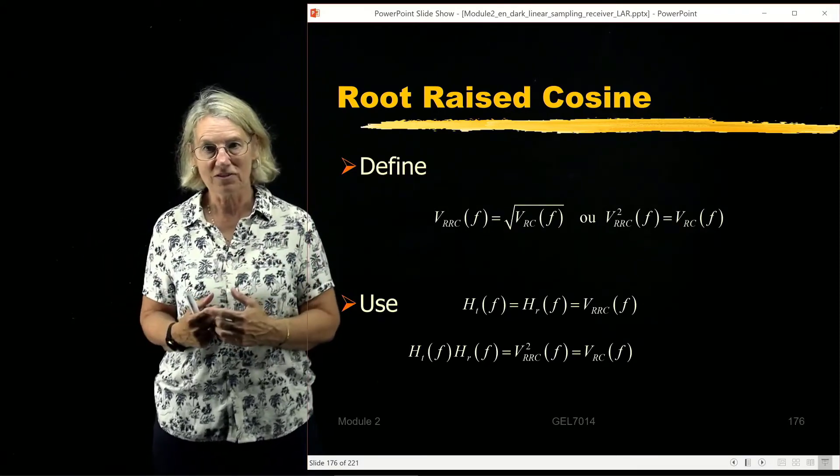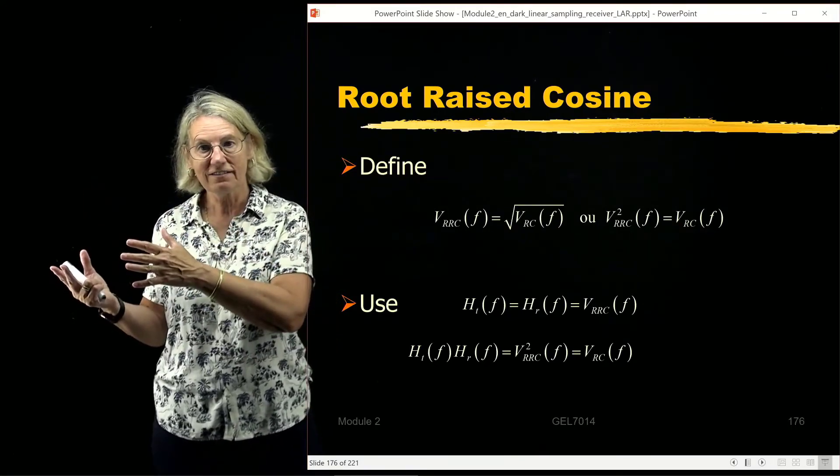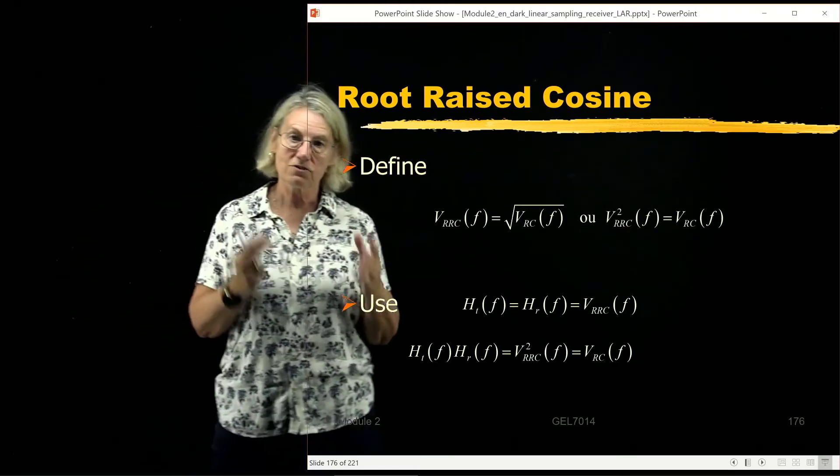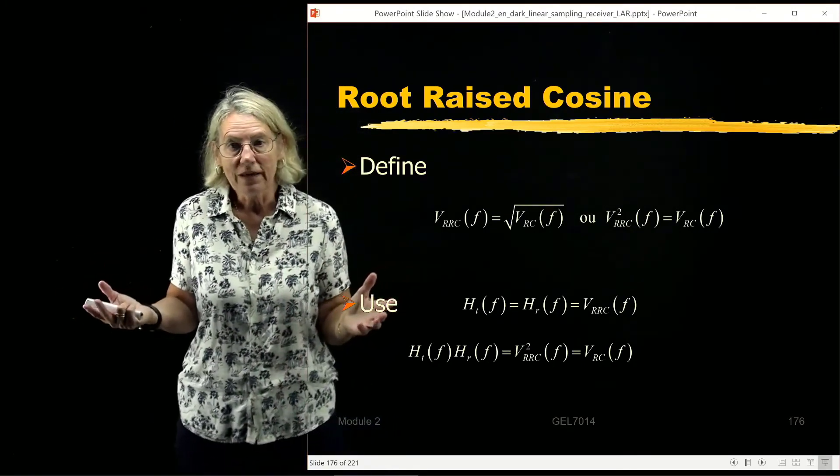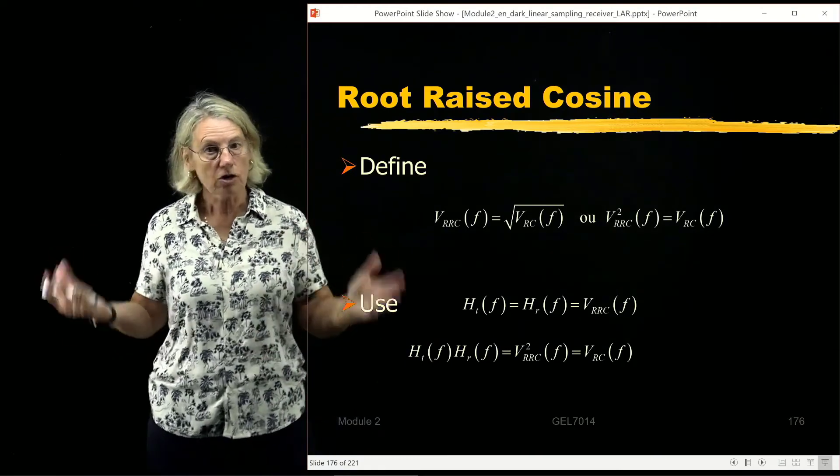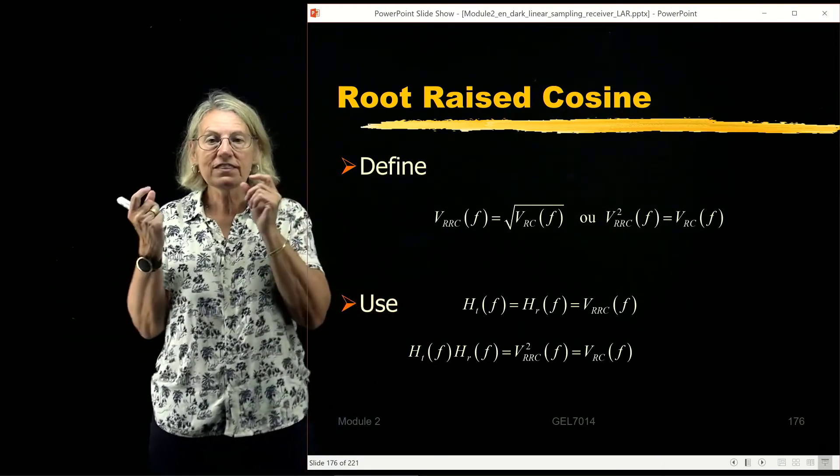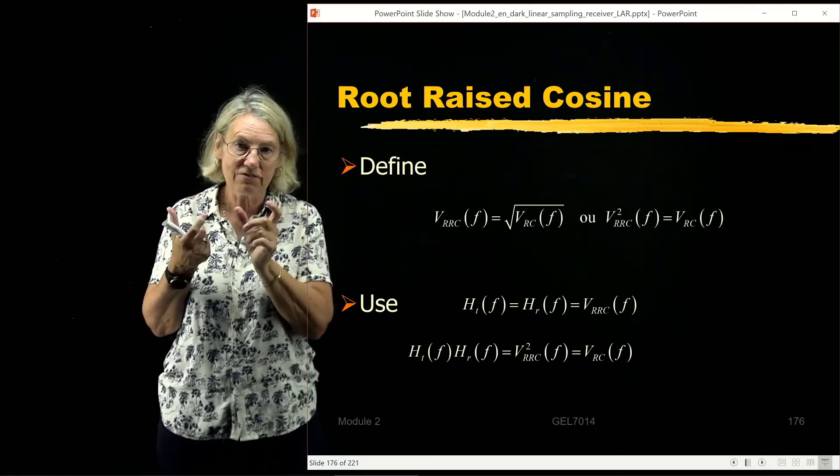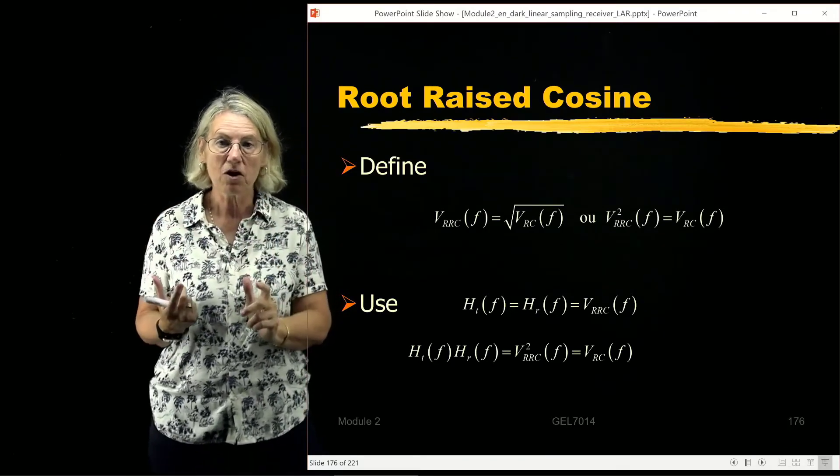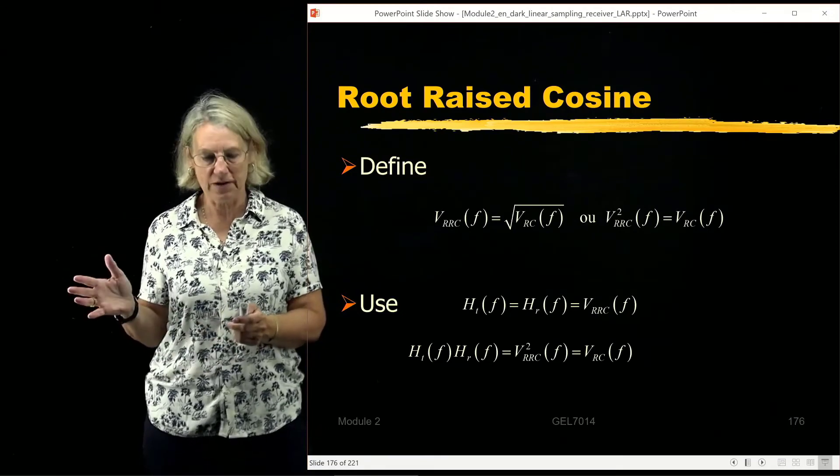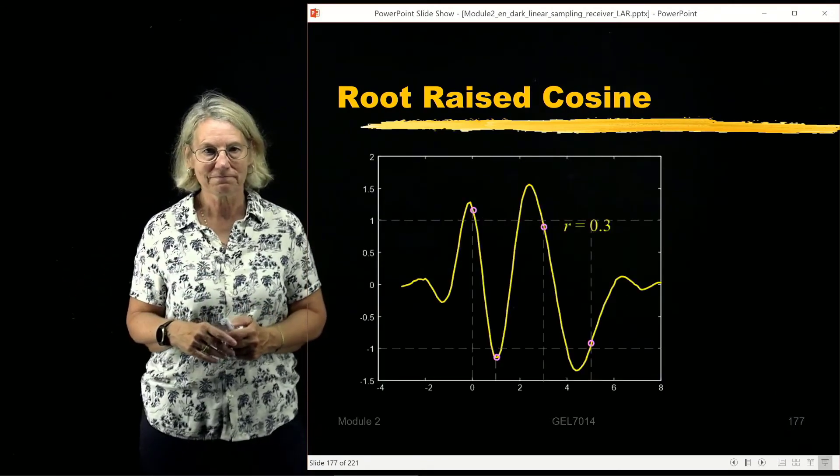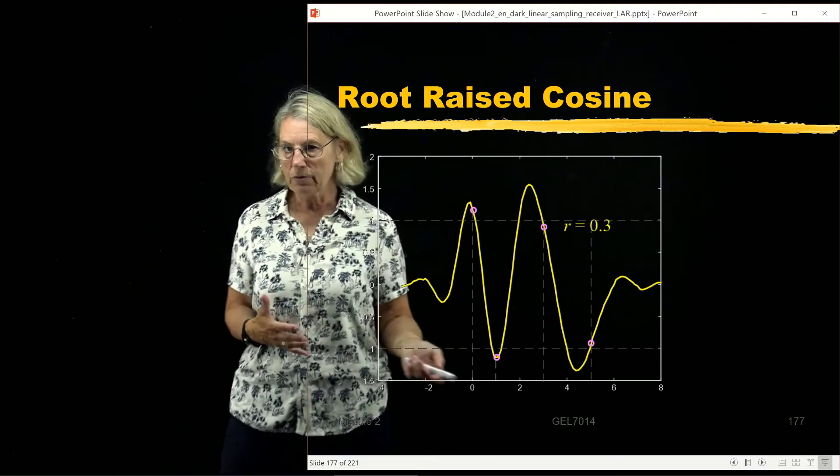And the raised cosine is a Nyquist pulse. If I used a raised cosine at the transmitter and a raised cosine matched at the receiver, the product would no longer be raised cosine; it would no longer be a Nyquist pulse. So if I want the effect of transmitter and receiver combined to be a Nyquist pulse, I would use the root raised cosine at each one, at the transmitter and then at the receiver.